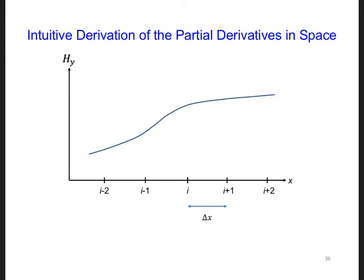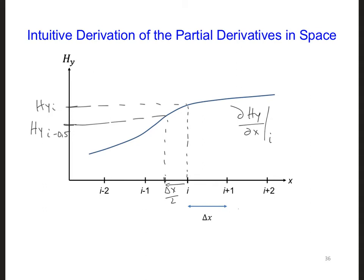Alternatively, we could use a neighboring value to the left. Here, we have Hy at position i, and if we go delta x over 2 away to the left, we get the value Hy(i minus 0.5). Using these two values to estimate the slope at position i gives approximately Hy(i) minus Hy(i minus 0.5), all divided by delta x over 2. This is called backward differencing.